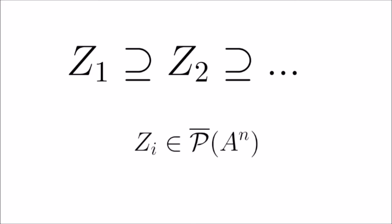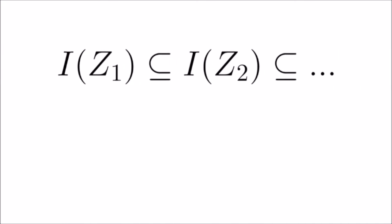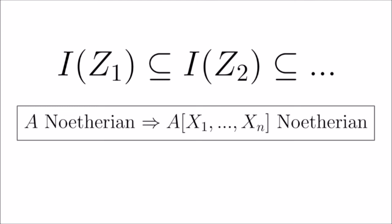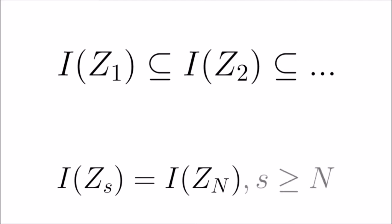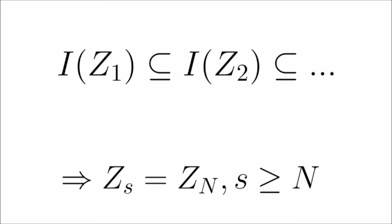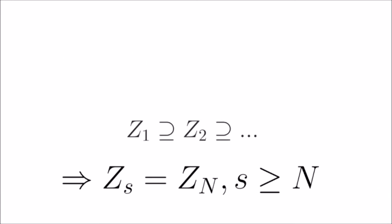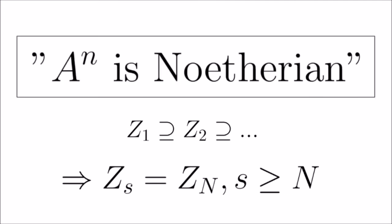Let's examine more topological properties of A^n. A decreasing sequence of closed sets of A^n gives, upon taking ideals, an increasing sequence of ideals. By the Hilbert basis theorem, our polynomial ring is Noetherian, so these ideals are equal above some fixed index n. Since closed sets biject onto radical ideals, this means our closed sets are equal starting from that fixed n as well. This holds for any closed decreasing sequence, and we express this by saying that A^n is Noetherian, allowing us to apply general properties of Noetherian topological spaces.